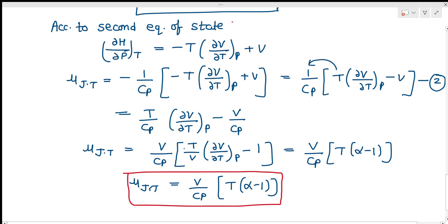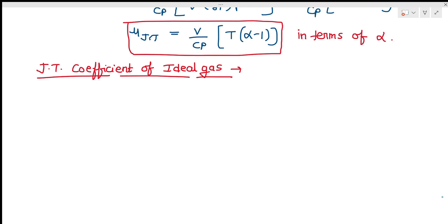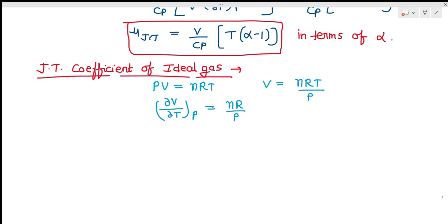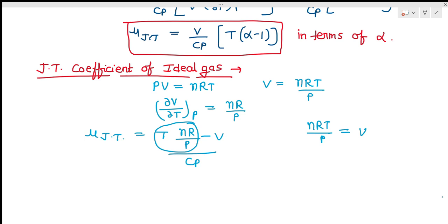We will now find out the Joule-Thompson coefficient for the ideal gas. We know PV = nRT and we need (del V / del T) at constant P. So V = nRT/P, therefore (del V / del T) at constant P = nR/P. Putting this value into our equation, nu_JT = (T · nR/P minus V) / Cp. We know nRT/P equals V, so we can substitute V for nRT/P.